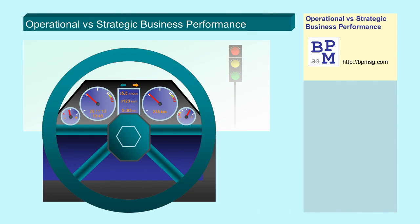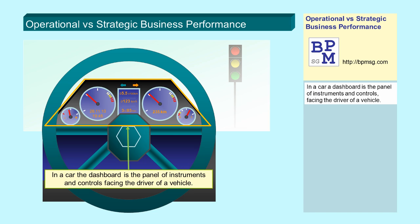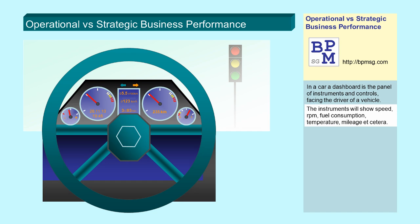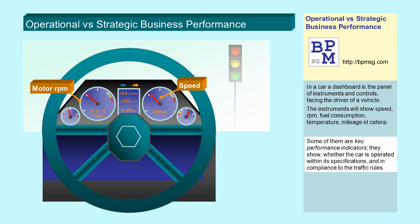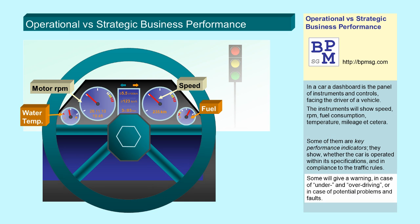Let me illustrate this with the picture of driving a car. In a car, a dashboard is the panel of instruments and controls facing the driver of the vehicle. The instruments will show speed, RPM, fuel consumption, temperature, mileage, etc. Some of them are key performance indicators. They show whether the car is operated within its specifications and in compliance with the traffic rules. Some will give a warning in case of under- and overdriving or in case of potential problems and faults.